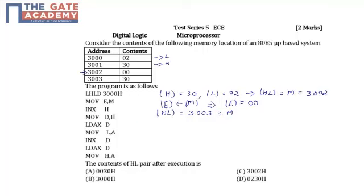Now MOV D,H means contents of D get the contents of H. So D equals 30.